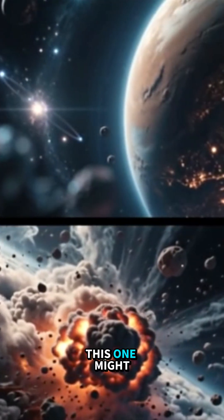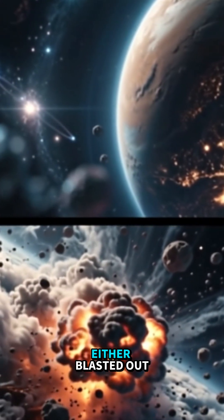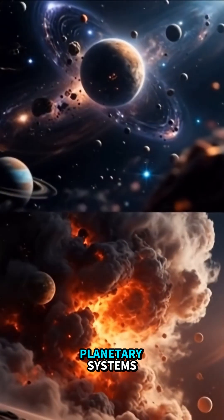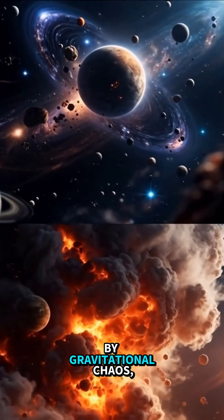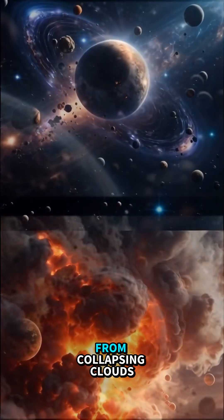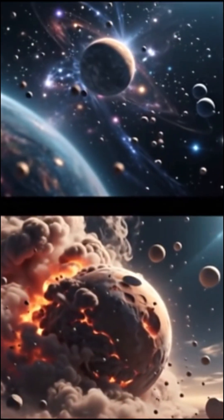Rogue planets like this one might form in two ways: either blasted out of their original planetary systems by gravitational chaos, or born alone from collapsing clouds of gas, much like stars.